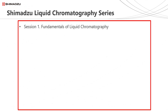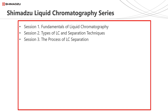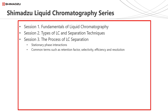This series of webinars continues from our last session entitled Types of Liquid Chromatography and Separation Techniques. Today's session discussing the process of LC separation is specifically looking at reverse phase high-performance liquid chromatography. We will look at the typical stationary phase interactions which occur in reverse phase HPLC and introduce some common and very important terms used with this type of liquid chromatography.